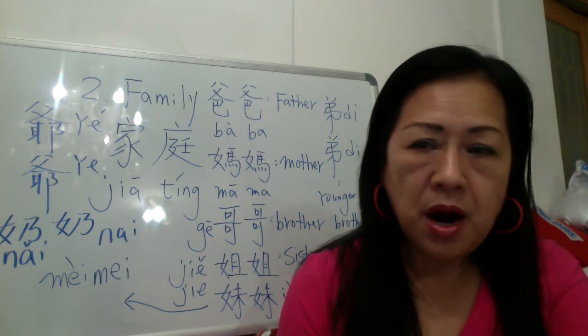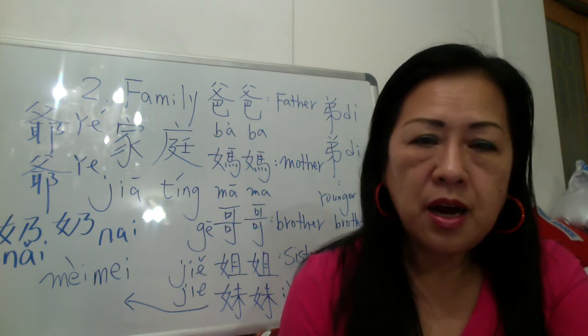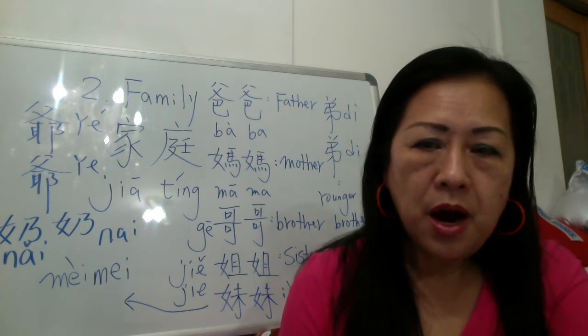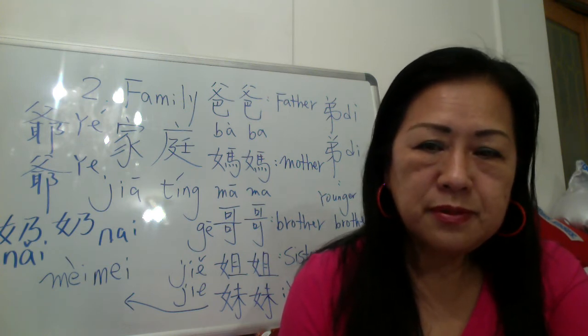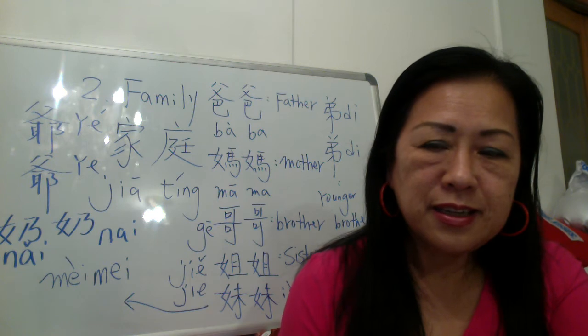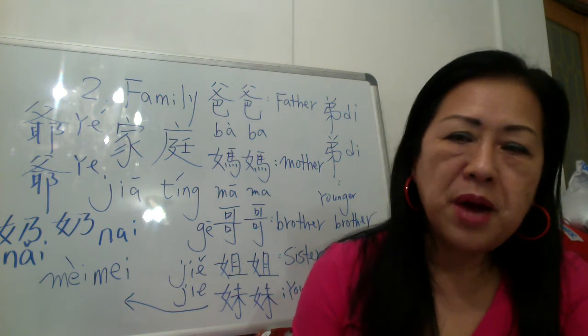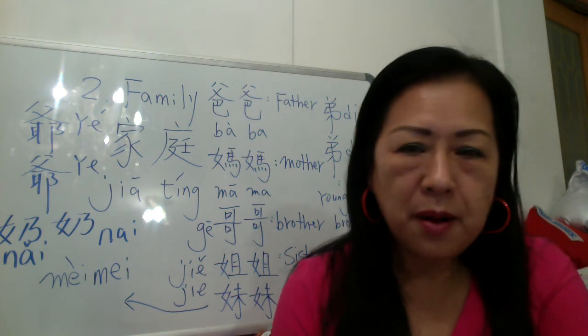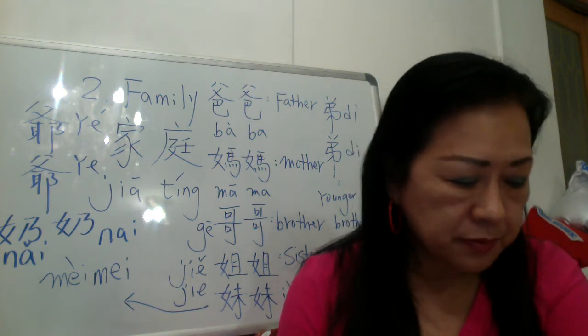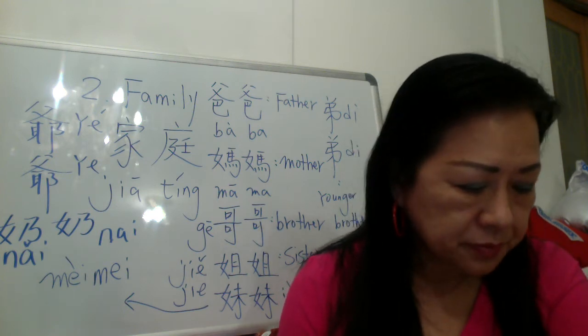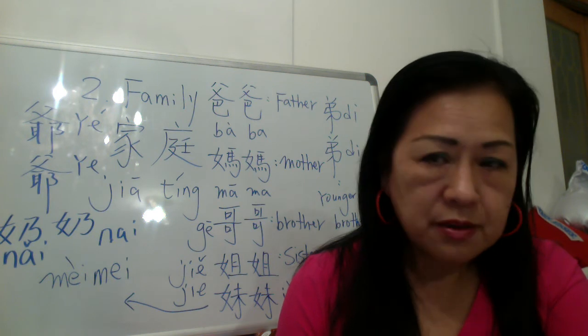Number six: mother, mom — 妈妈，妈妈，妈妈. Number seven: measure word for many common everyday objects — 个 is a very important measure word.